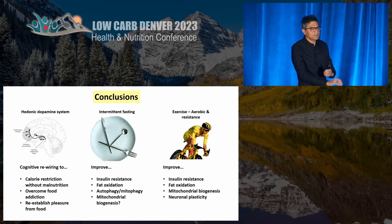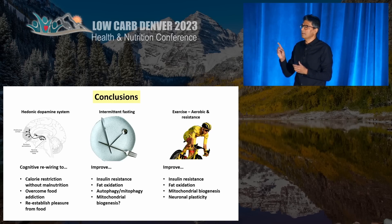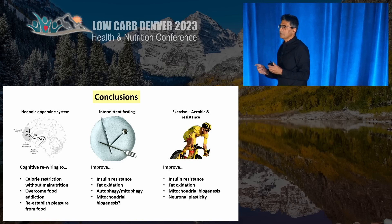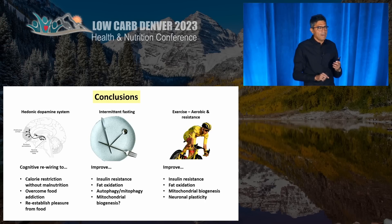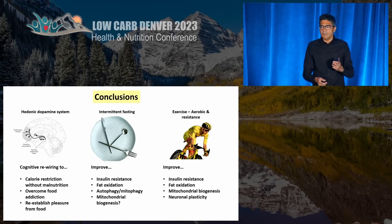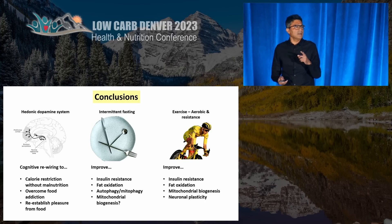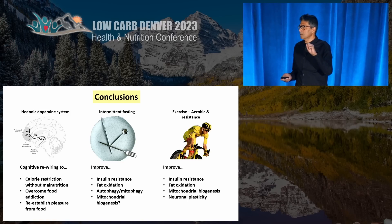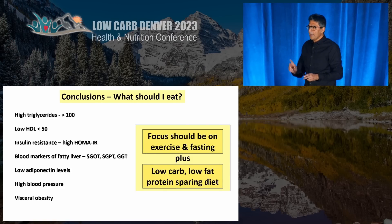In conclusion, I think we need to pay attention to how we can rewire our hedonic dopamine system so that we can learn to eat less in this era of overwhelming abundance of engineered food — so that we can overcome food addiction, reestablish pleasure from eating food, and use intermittent fasting and aerobic exercise to drive up fat oxidation, improve mitochondrial function, reduce insulin resistance, and promote autophagy.